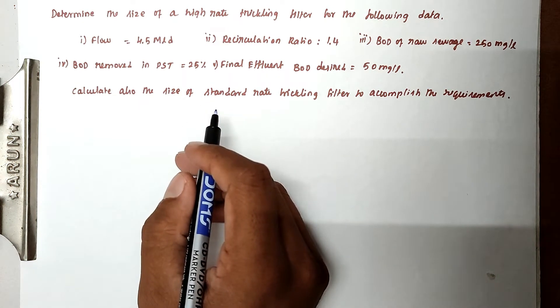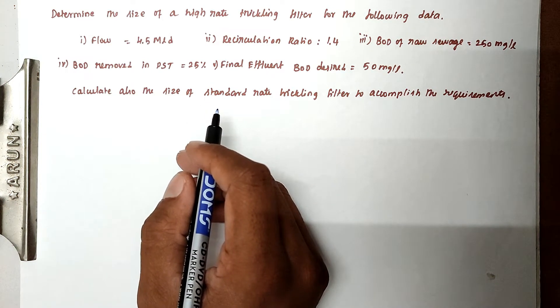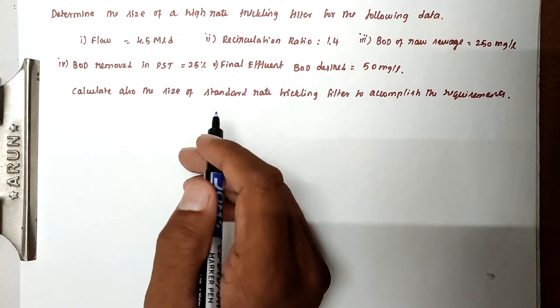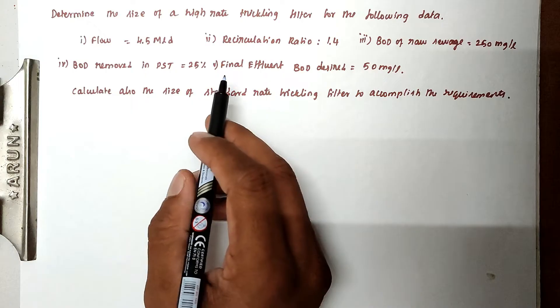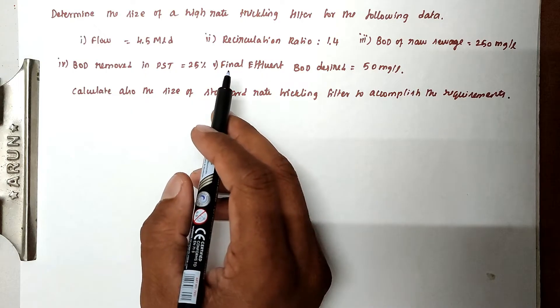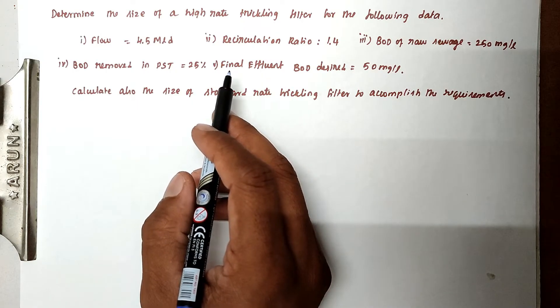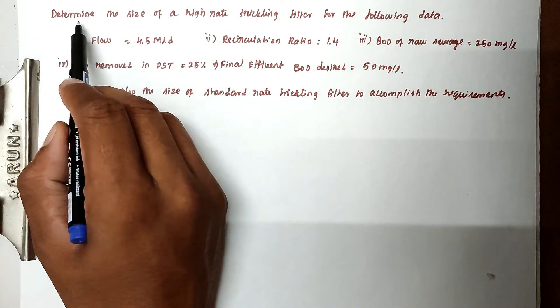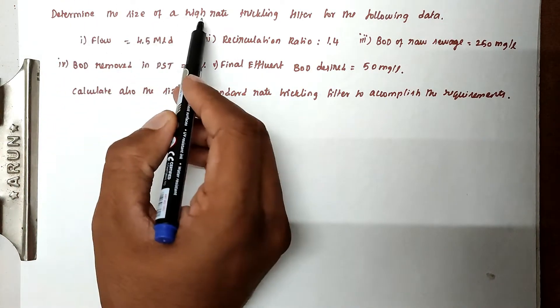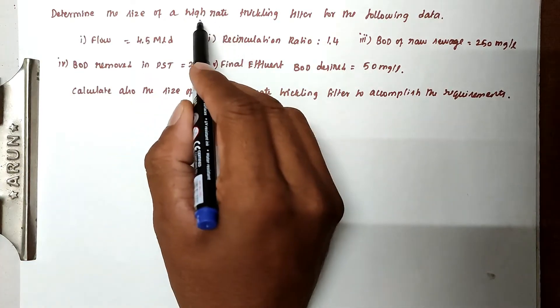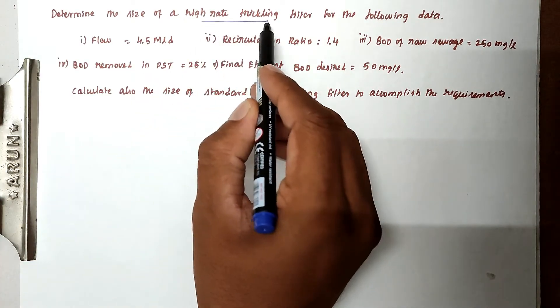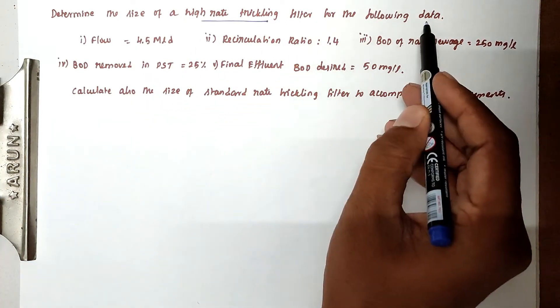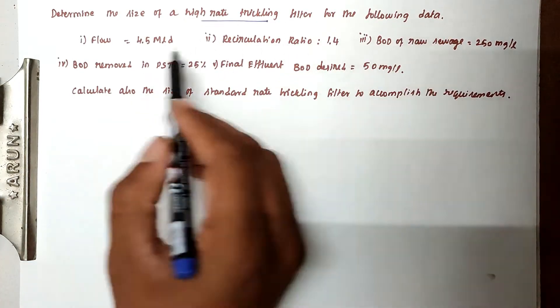Hello friends, welcome to civil engineering exam. Today we are going to see the problem related with waste water engineering in the topic of high rate trickling filter. So the problem is: determine the size of high rate trickling filter for the following data.